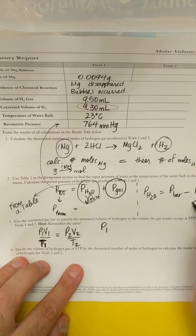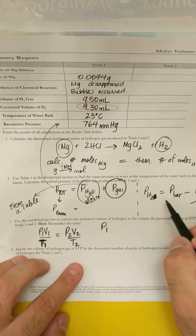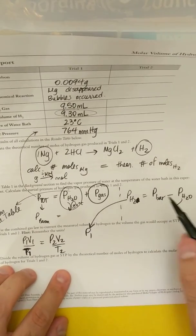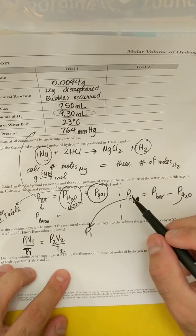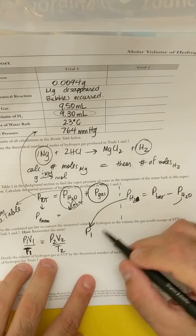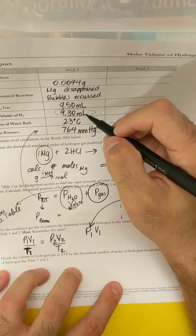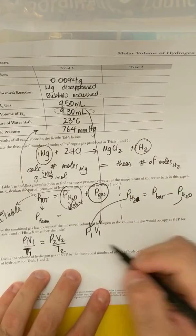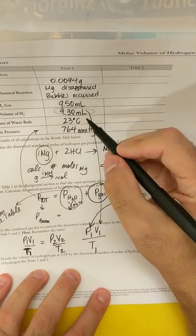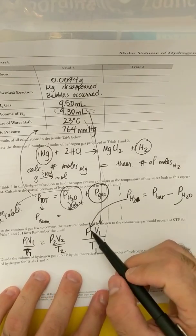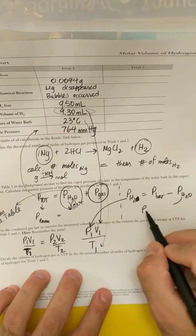P1 is going to be the pressure. Oh sorry, I made a mistake. That should say PH2. P1 is going to be PH2 that you got. So if you're watching my video, this should say PH2. P1 should be PH2. V1 is the volume that you corrected up here over T1, which is whatever temperature you recorded this reaction at. So P1 is the pressure that you... This is going to be P1. P1 is equal to PH2, the P of the gas.